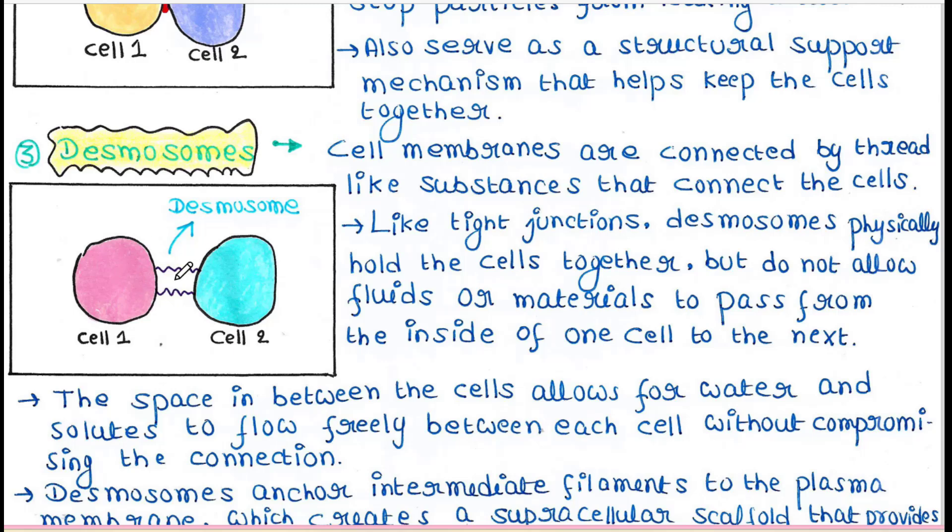Cell membranes are connected by thread-like substances that connect the cells. Like tight junctions, desmosomes physically hold the cells together but do not allow fluids or materials to pass from the inside of one cell to the next.